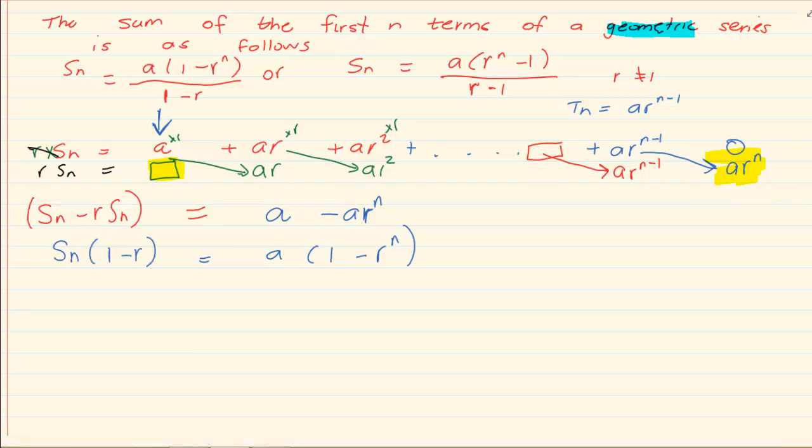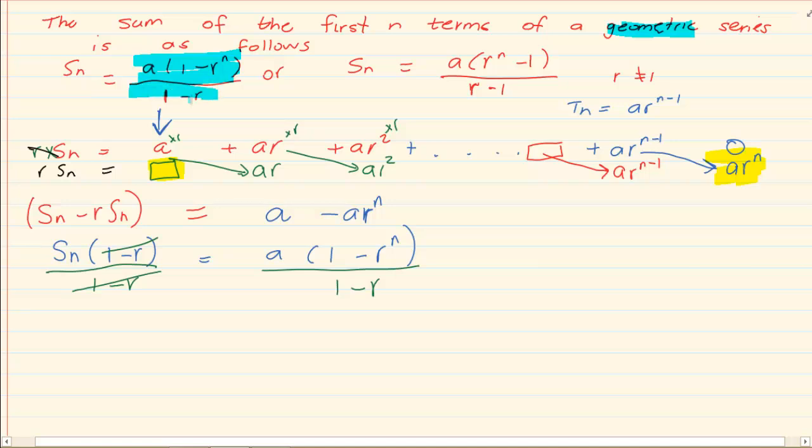Now I want to get Sn alone so I divide by 1 minus r. And what you do on one side you do on the other side. So we have Sn is equal to a into 1 minus r to the power of n over 1 minus r. Which is what you were asked to prove.